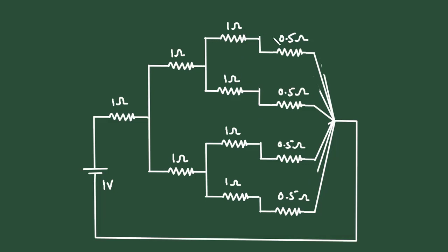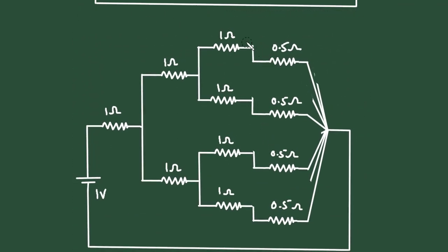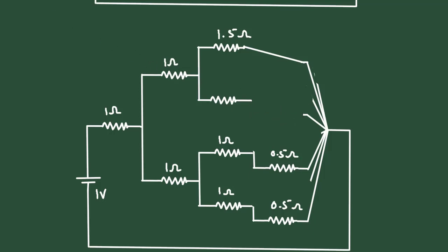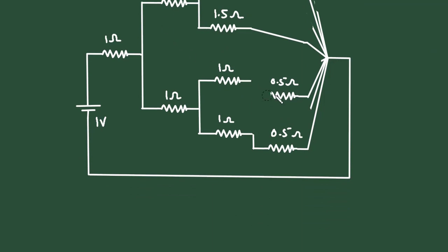Now we can see this 1 ohm and 0.5 ohm are connected in series. So this becomes a single resistor of 1.5 ohm. Applying this throughout the circuit, each such series combination gives 1.5 ohm. So we have multiple 1.5 ohm resistors in the simplified circuit.